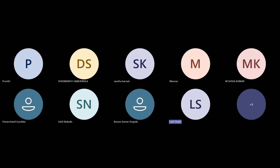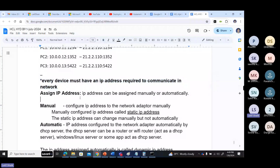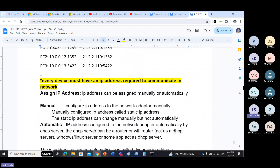We will complete fast and you will read. Every device must have an IP address to communicate in the network — that is rule number one. Every device must have an IP address to communicate in the network.